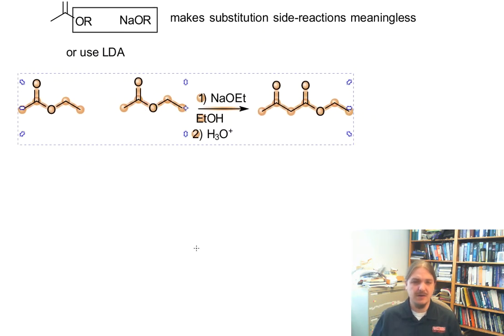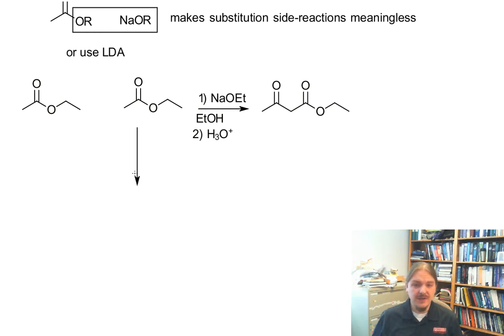Let me go grab my reaction. Just like in the aldol reaction, one molecule of ester gets to be the nucleophile, and it gets deprotonated by our base. And so now we have enolate anion, the conjugate base of ethyl acetate. The other molecule of ethyl acetate hangs around as an electrophile.